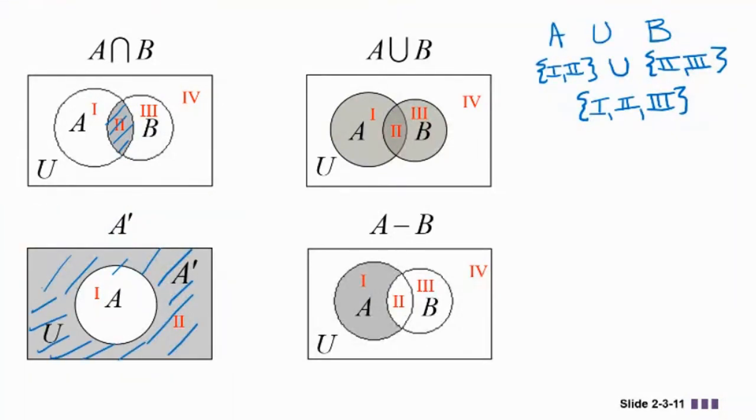So now we have the difference. This is an interesting one. A take away B. I like it. It looks like you took a little bite out of A, right? You literally removed whatever it had in common with B. You took it out. So instead of shading all of A, you're just shading region 1. It's everything that's in A, but not in B.